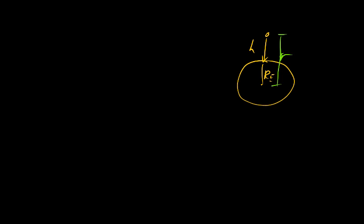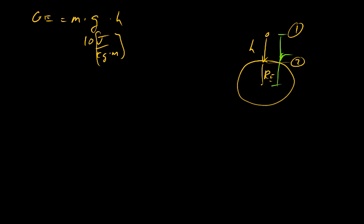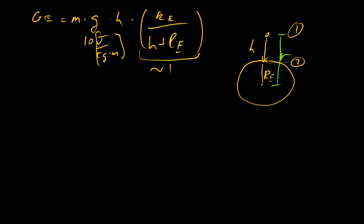We're interested in the gravitational energy gained from falling from point one to the surface at point two. The first form looks like this: gravitational energy equals mass times the local gravitational acceleration — the energy it takes to lift one kilogram by one meter, so 10 joules per kilogram-meter — times h, times the correction factor: the radius of the earth over h plus the radius of the earth. This term is usually about one if the height is small compared to the radius of the earth, and we get back our classical simple form of just mg times h.